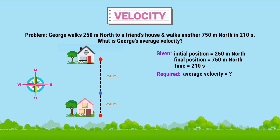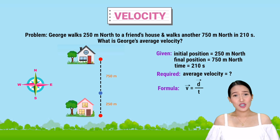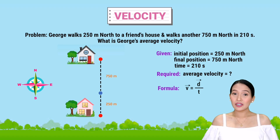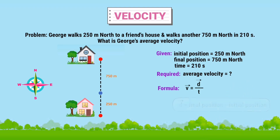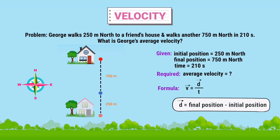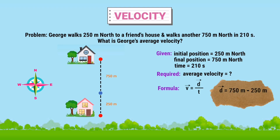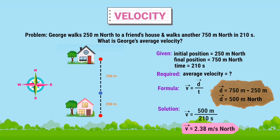What's required is the average velocity, so we use the formula V equals D over T. But before solving for the average velocity, let us solve first for the displacement since it is not given in the problem. Displacement equals final position minus initial position, so that's 750 meters minus 250 meters equals 500 meters north. Now we can solve for the average velocity by substituting all the values: 500 meters divided by 210 seconds. The result is 2.38 meters per second north. That means George's average velocity is 2.38 meters per second north.